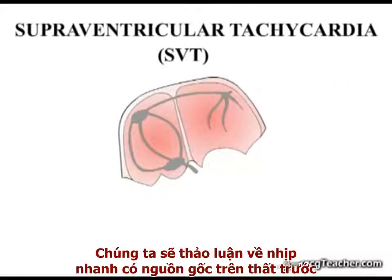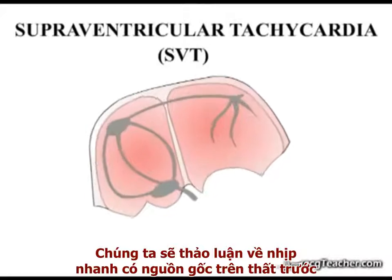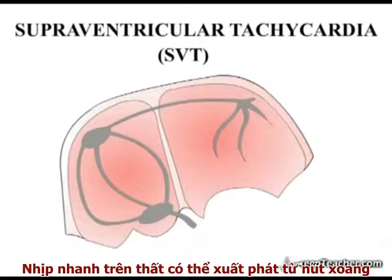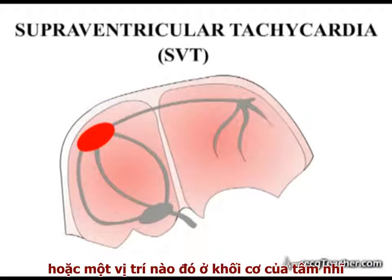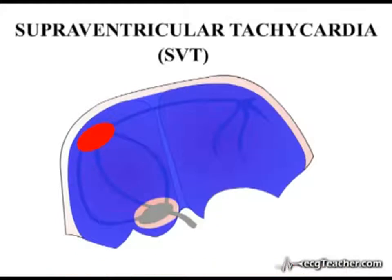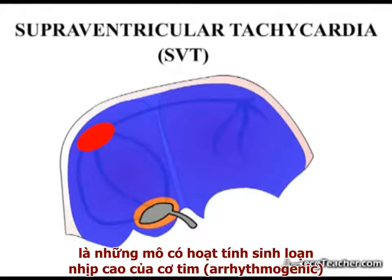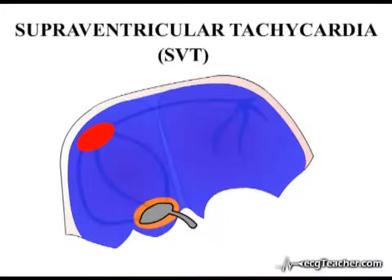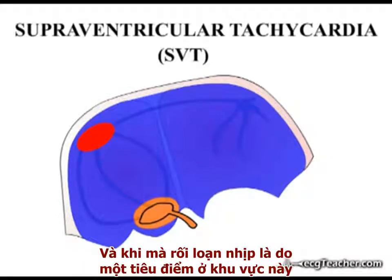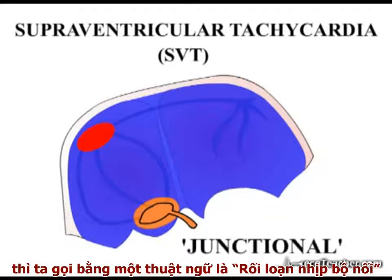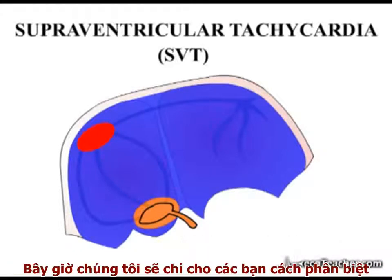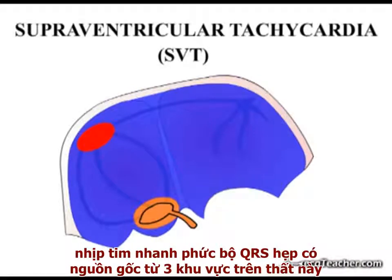We will deal with tachycardias arising in the supraventricular region first. Supraventricular tachycardias may arise from the sinoatrial node or an ectopic focus in the main mass of the atria. In addition, the area encompassing the AV node, bundle of His, and immediately surrounding atrial tissue is a highly arrhythmogenic area of the heart. This area is referred to as the junctional region, and arrhythmias arising from a focus within this region are termed junctional. We will now show you how to distinguish between narrow complex tachycardias arising from each of these three supraventricular zones.